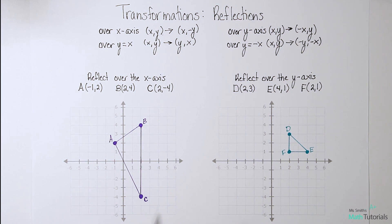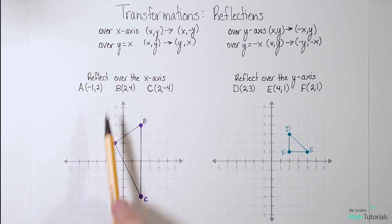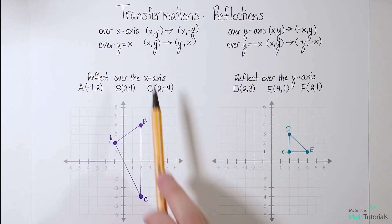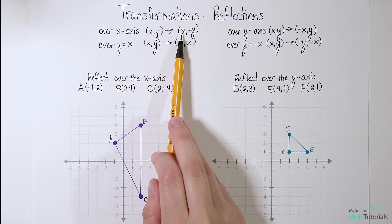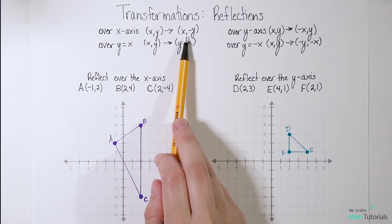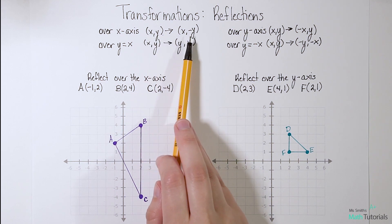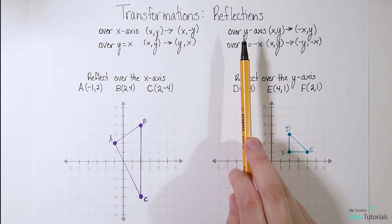The first type is reflecting over the x-axis. This right here is the x-axis and we would be reflecting over it. The rule for this is (x, y) becomes (x, -y). So we would just take the same original point and whatever the y is, we'd flip the sign of it. We'll see that in action in just a minute.